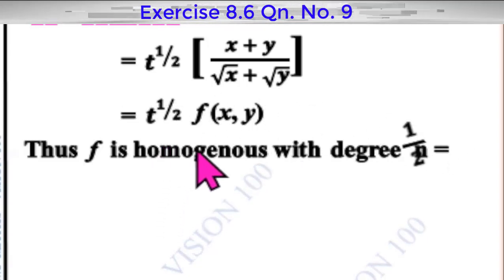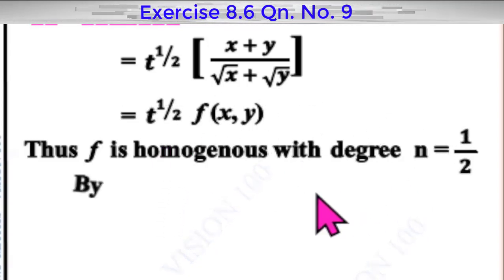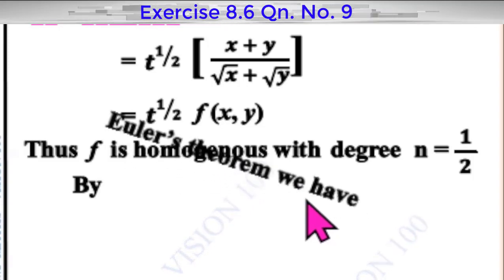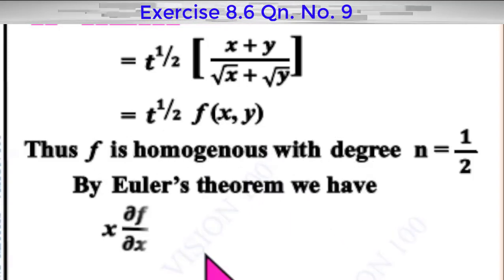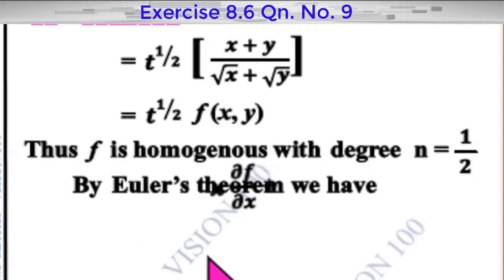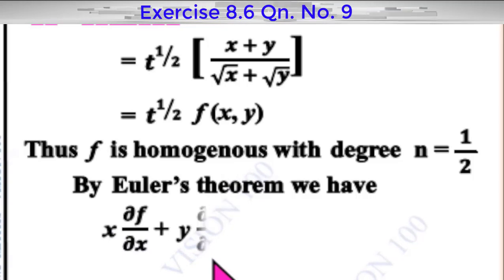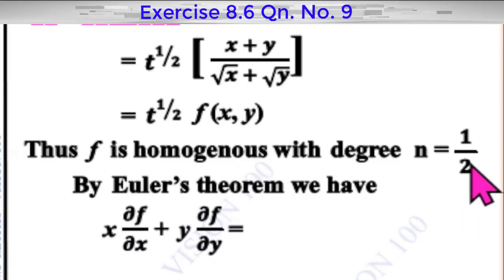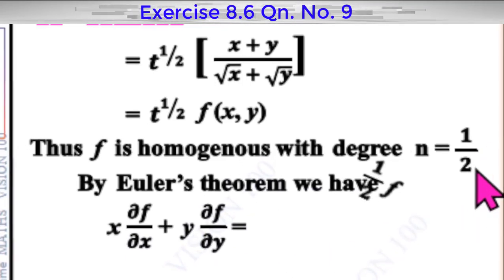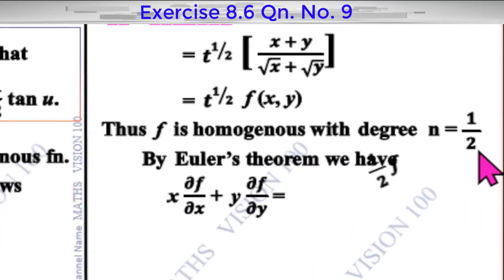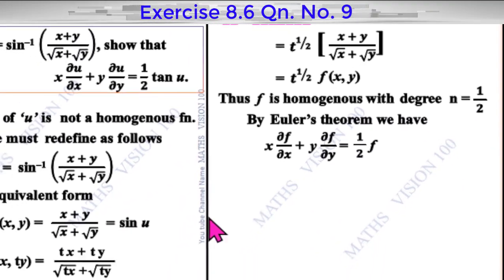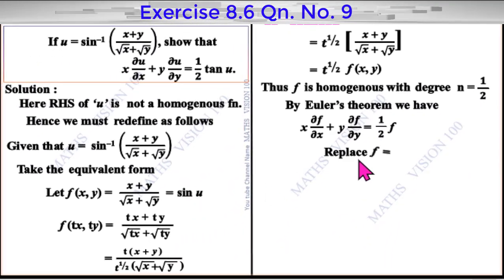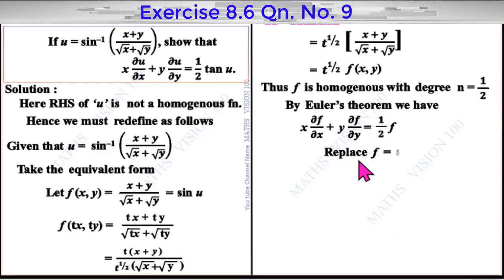Since f is a homogeneous function, by Euler's theorem we have x dou f by dou x plus y dou f by dou y is equal to n times f, where n is equal to 1 by 2. Therefore it equals 1 by 2 times f. Now replace f by sin u.